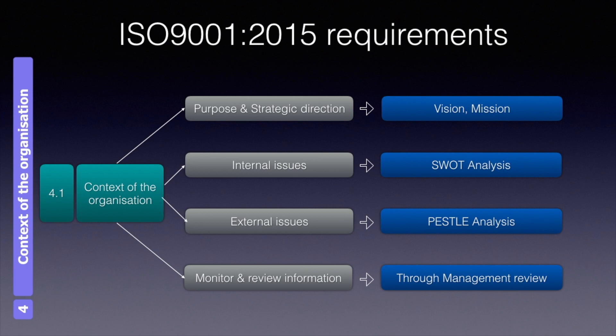Internal issues can be monitored through internal sources such as KPI dashboards and balanced scorecards. External issues can be monitored through sources such as newspapers, magazines, and articles. Although external issues cannot be controlled, changes can be anticipated and necessary actions taken. Risks and opportunities are to be evaluated accordingly, which is a requirement of clause 6.1 — we will look at that in clause 6.1.